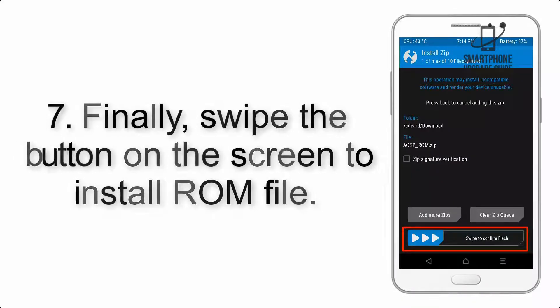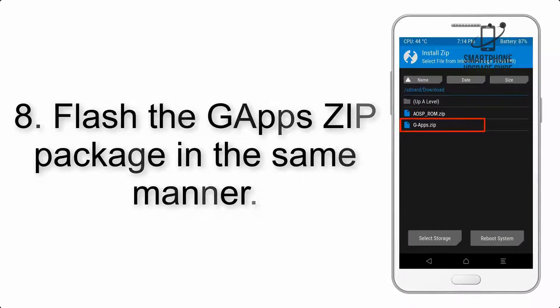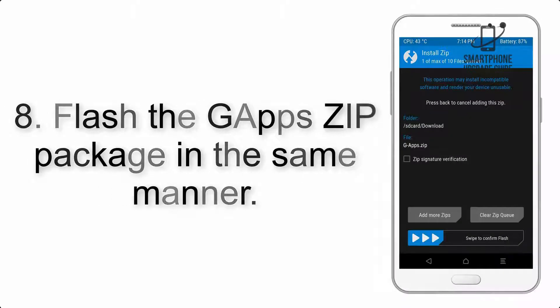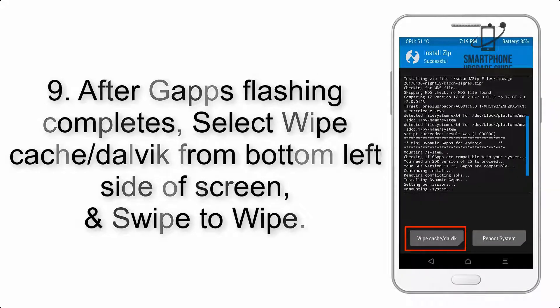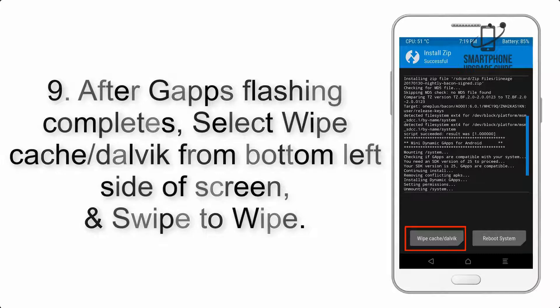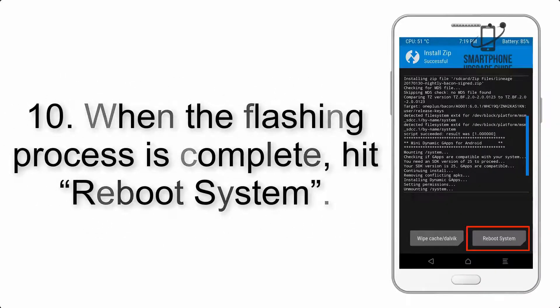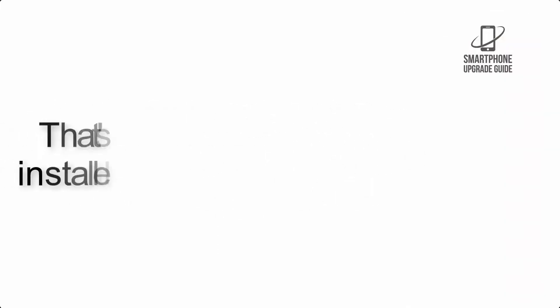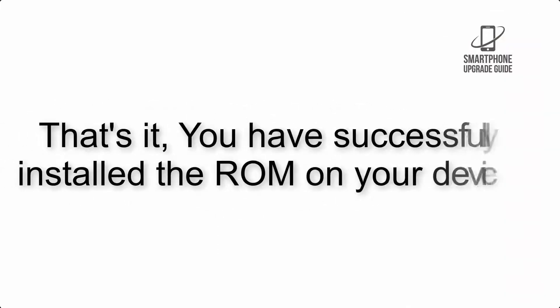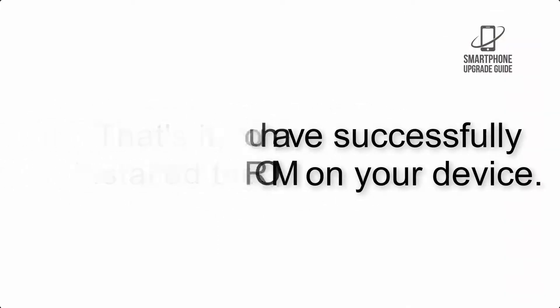Step 7: Swipe the button on the screen to install the ROM file. Step 8: Flash the GApps zip package in the same manner. Step 9: After GApps flashing completes, select Wipe Cache and Dalvik from the bottom left side of the screen and swipe to wipe. Step 10: When the flashing process is complete, hit Reboot System. That's it — you have successfully installed the ROM on your device.